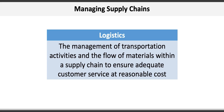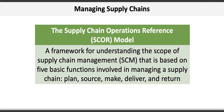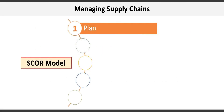Underlying the effective management of supply chains is the Supply Chain Operations Reference, or SCOR model, which is a framework for understanding the scope of supply chain management (SCM). It is based on five basic functions involved in managing a supply chain: Plan, Source, Make, Deliver, and Return.